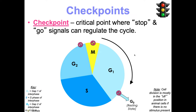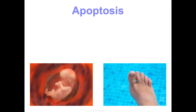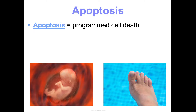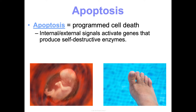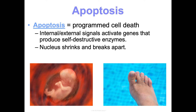In general, your cells are in an 'off' or 'stop' position unless there's some sort of stimulus present to signal it's time to divide. Another key factor in regulation is apoptosis — a process of programmed cell death. An internal or external signal activates genes in the cell that produce self-destructive enzymes, essentially allowing the cell to kill itself. Its nucleus will shrink and dissolve, the cell will break apart, and lysosomes will destroy the remaining pieces.